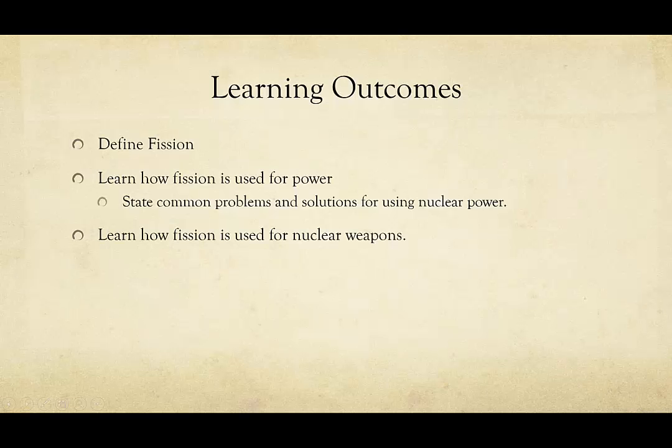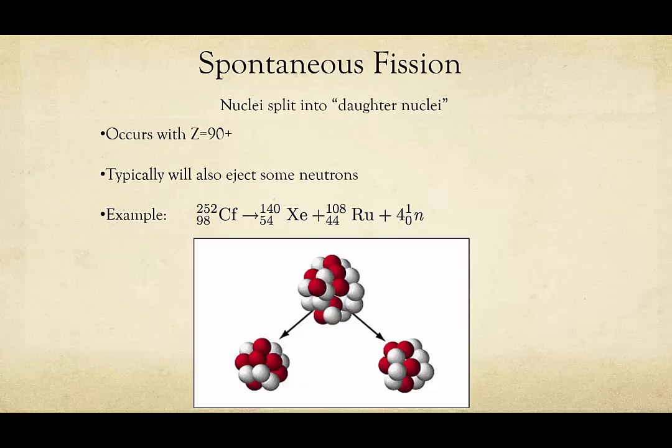Nuclear fission. In this video we'll define fission and talk about how it is used for power and how it is used for nuclear weapons. Fission is when nuclei split into smaller daughter nuclei. This will generally occur when atomic number is greater than 90, so generally only with very large nuclei.